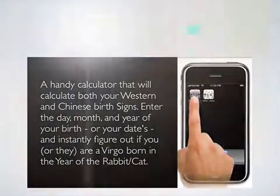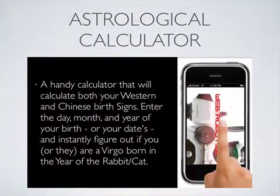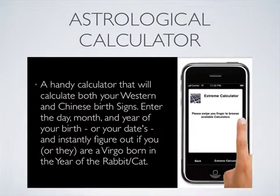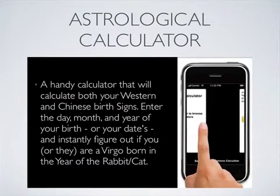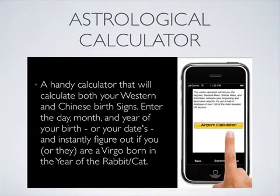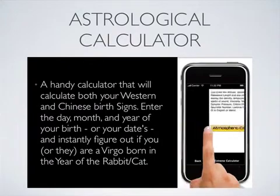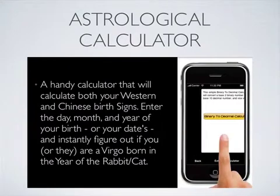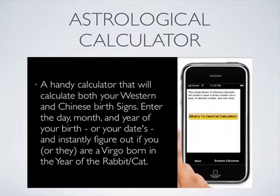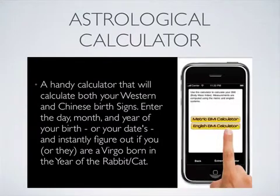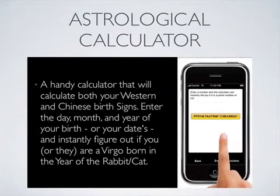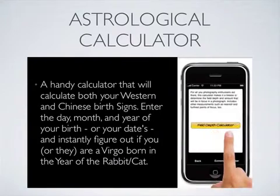Astrological Calculator. A handy calculator that will calculate both your Western and Chinese birth signs. Enter the day, month, and year of your birth, or your date's, and instantly figure out if you or they are, for example, Virgo born in the year of the rabbit or cat.